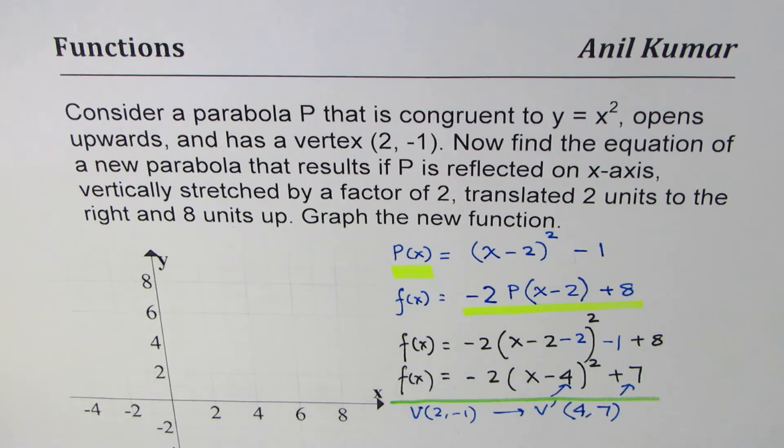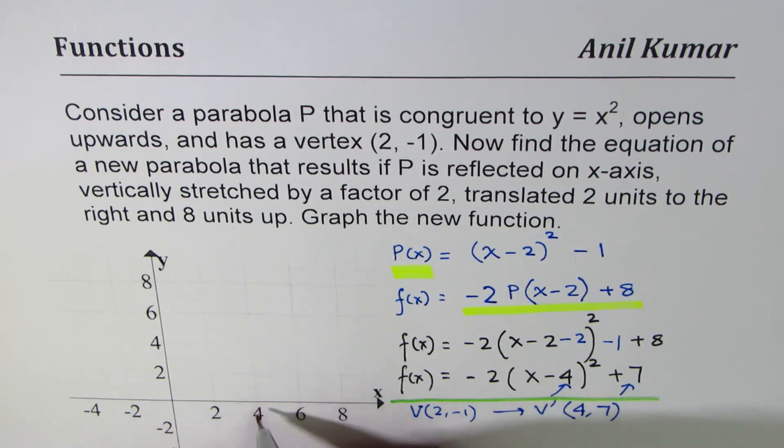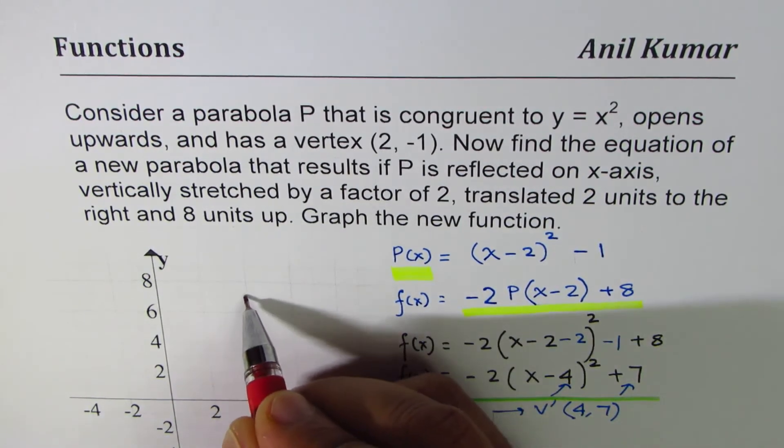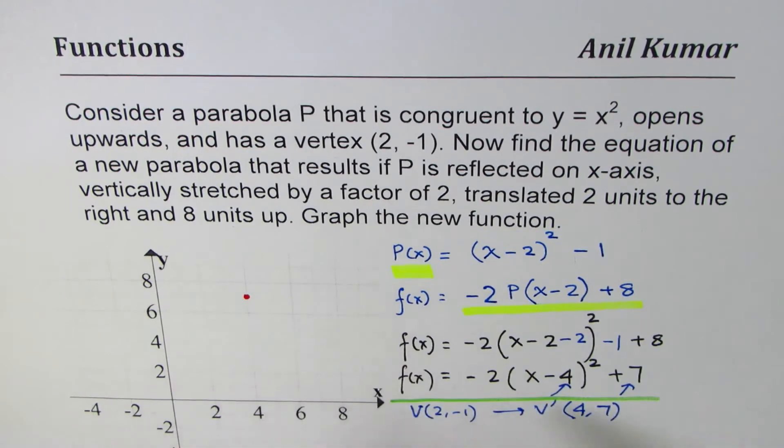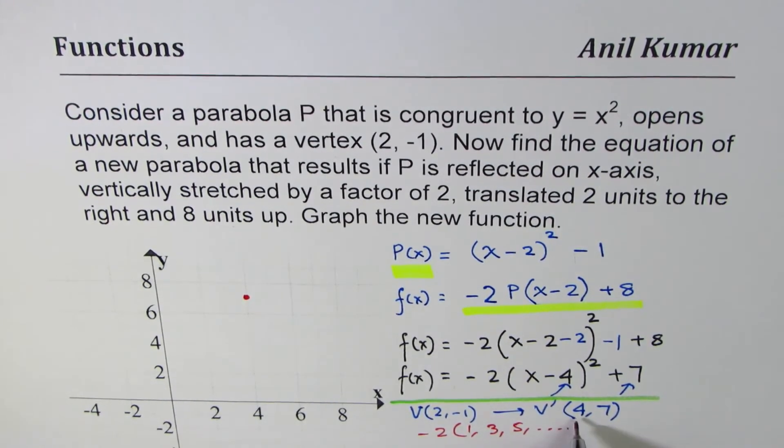Now, the second part of this equation is to sketch the transformed function. To sketch, let's begin with the vertex itself. It is at (4, 7). So on this graph paper, this is 4 and 7. So that becomes the vertex. Now it opens down and the steps are -2. So we can say -2 times 1, 3, 5, so on.